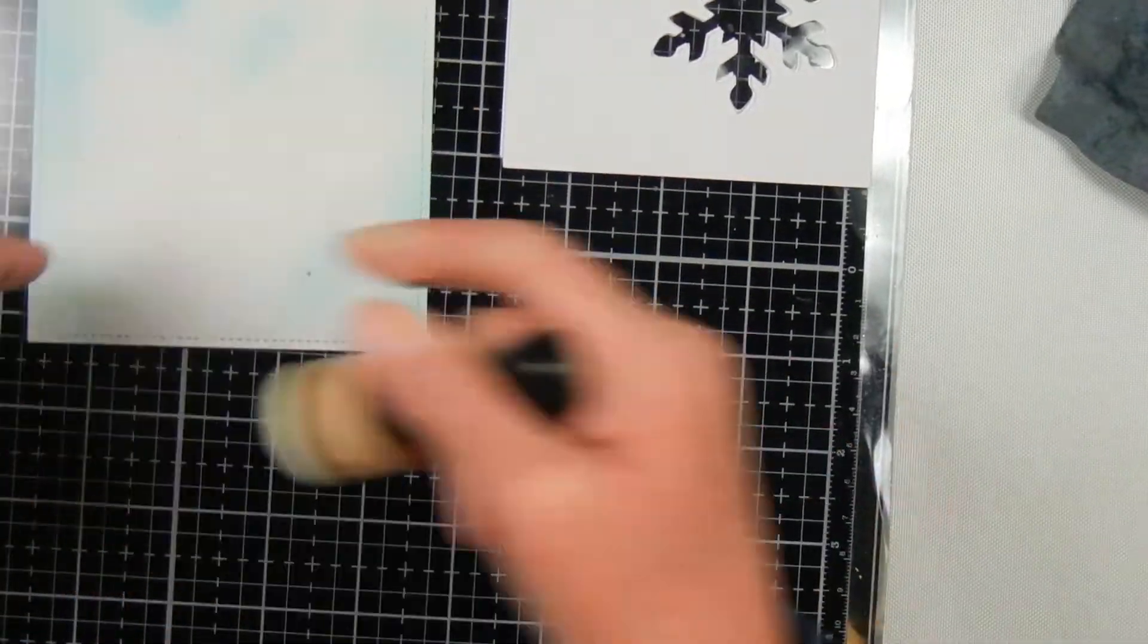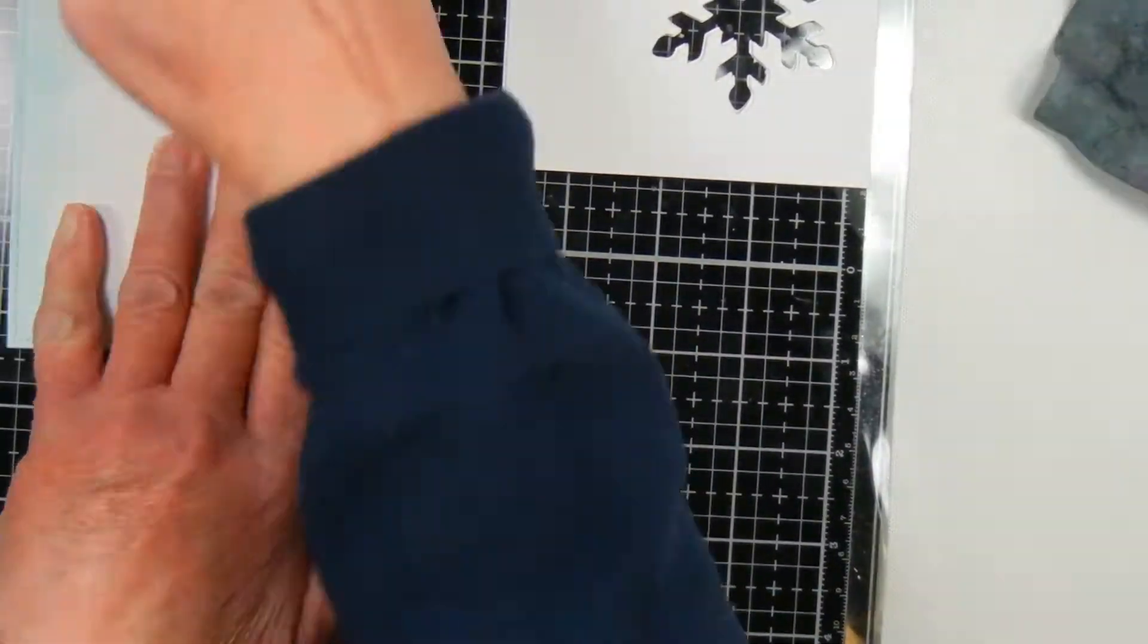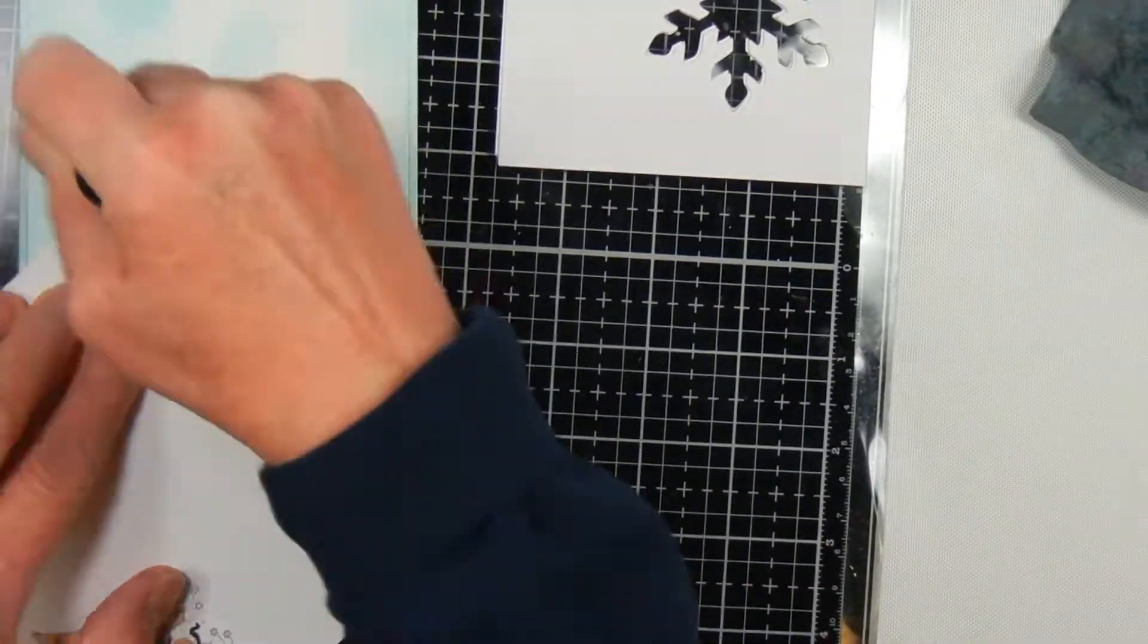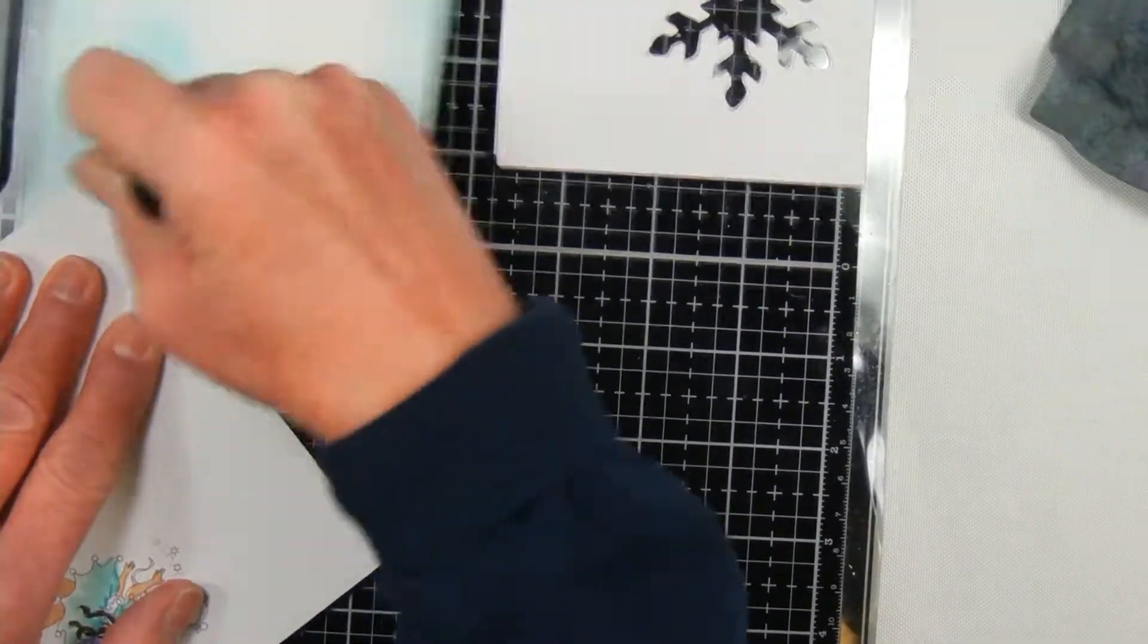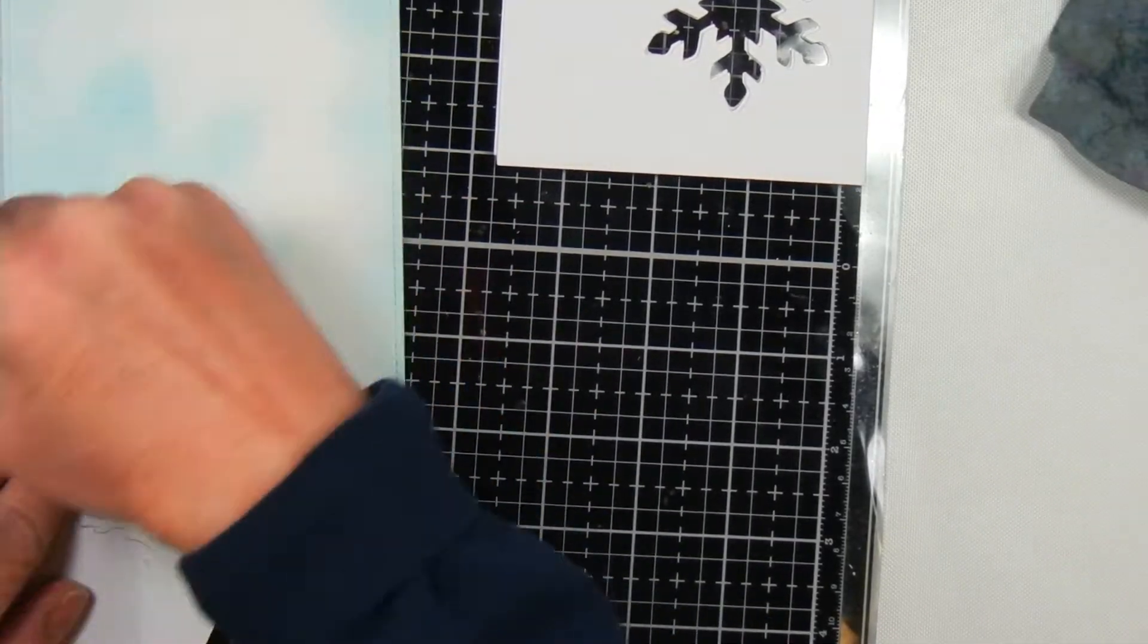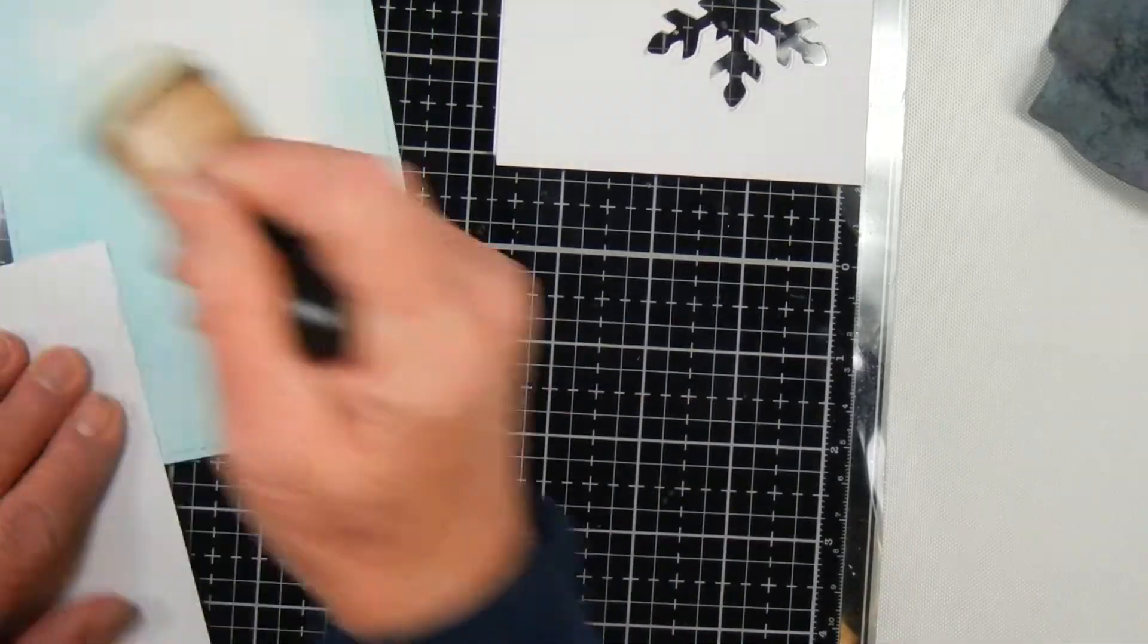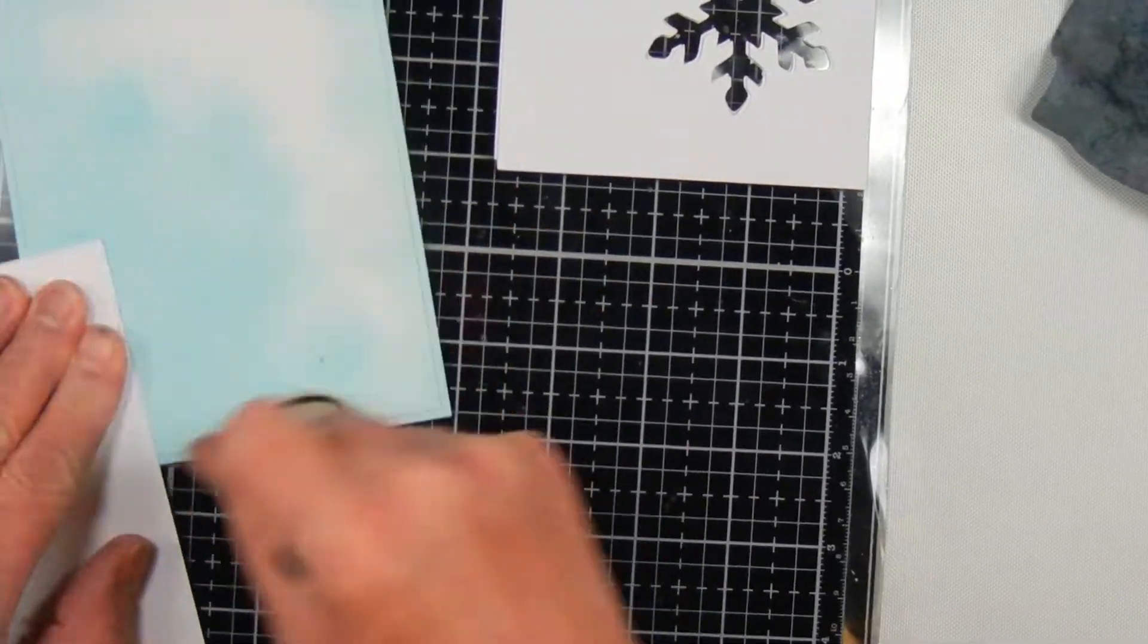Now I'm taking a piece of Bristol Smooth card stock that I cut with a Lawn Fawn rectangle die that has a stitched edge around it, and I'm doing ink blending with my salvage patina around the sides and just in the corner where the shaker will show up.